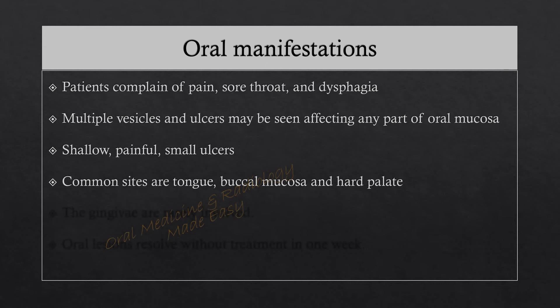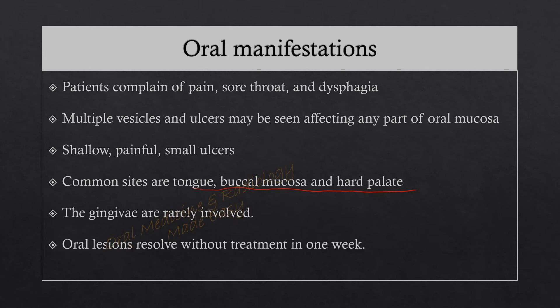The most common sites where vesicles or ulcers are seen in HFMD are the tongue, buccal mucosa, and hard palate, though they may involve any part of the oral mucosa. The gingiva and hard palate are rarely involved. Oral lesions resolve without treatment in one week.